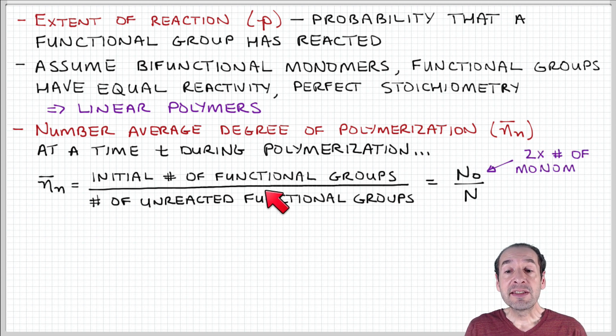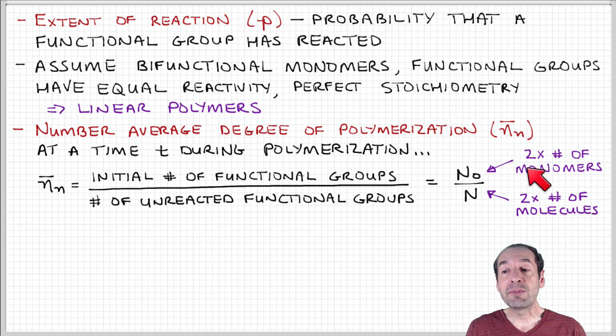Initially, the sample contains only monomer units. So the initial number of functional groups is going to be two times the number of monomers, because we're considering bifunctional monomers. So each monomer contains two functional groups.